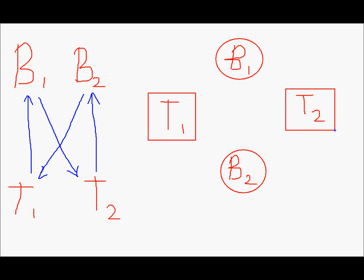Next we'll draw the arrows. If a process already has a resource then the arrow will point towards the process. So B1 has T1 so the arrow will point towards B1. And B2, baby B2 has toy T2. So the arrow will point towards B2.